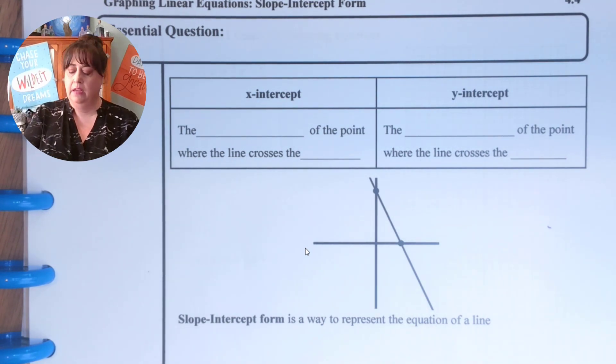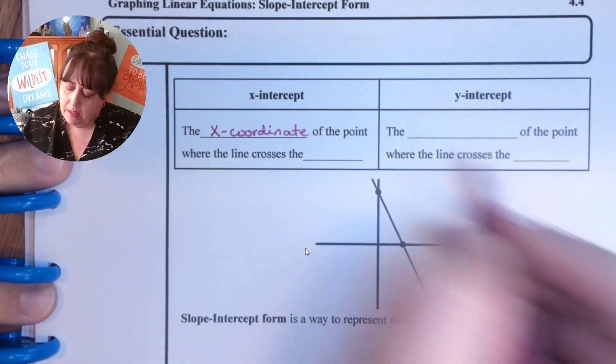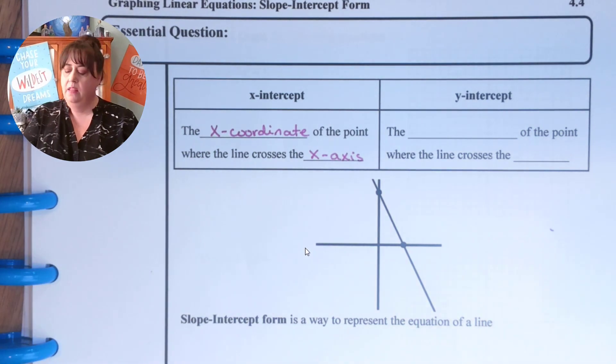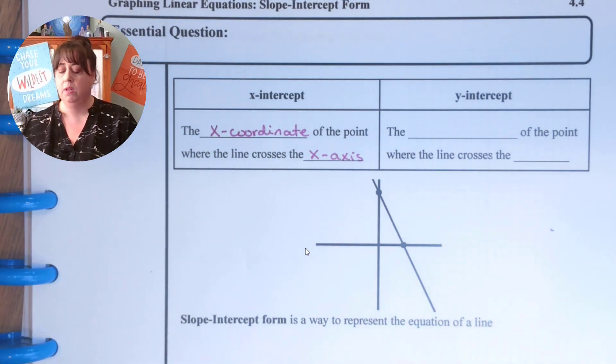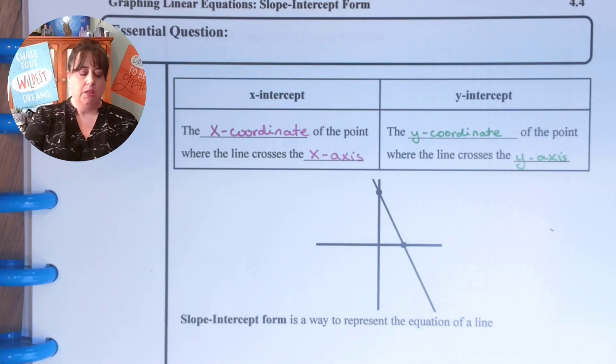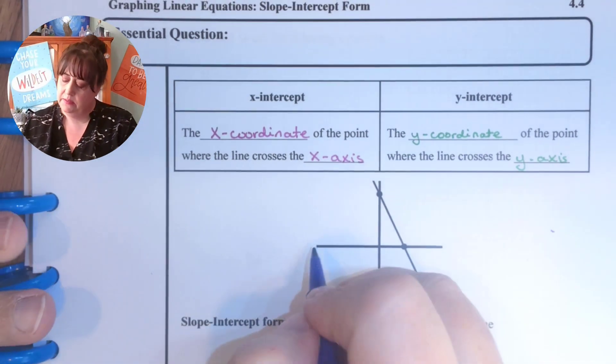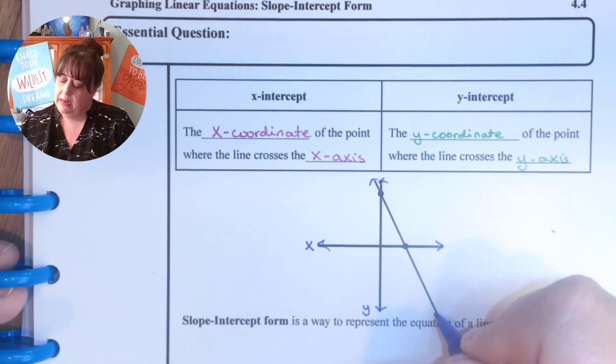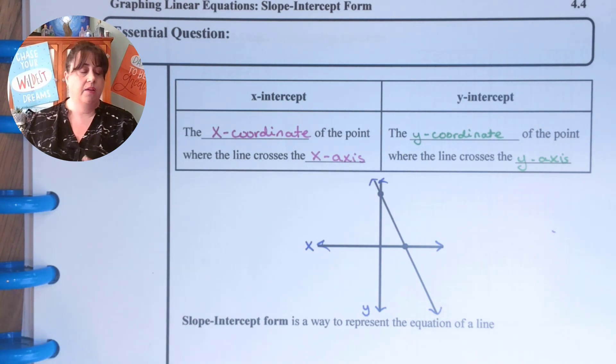So the x-intercept is the x-coordinate of the point where the line crosses the x-axis and the y-intercept is the y-coordinate of the point where the line crosses the y-axis. So what I have here is a very generic x and y-coordinate plane without much written on it. The one thing we do need to add is we need to add which one's our x-axis and which one's our y-axis so that we are oriented the right way. This is just a line and now we're going to add which one's our x-intercept and our y-intercept so we're able to read it.